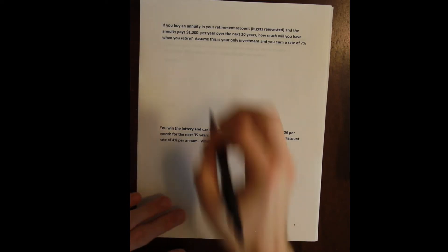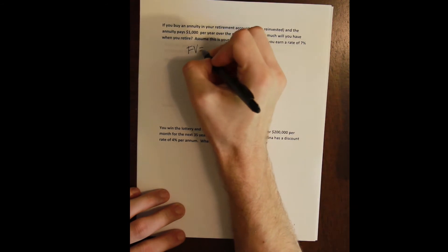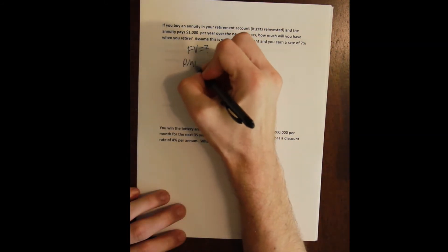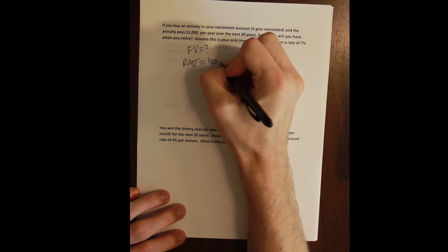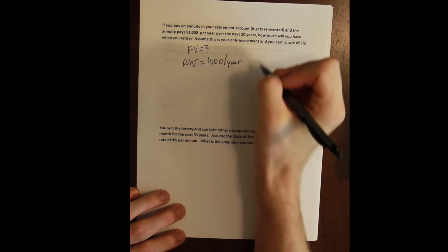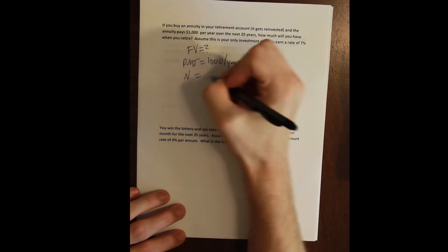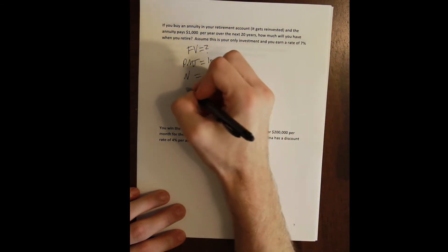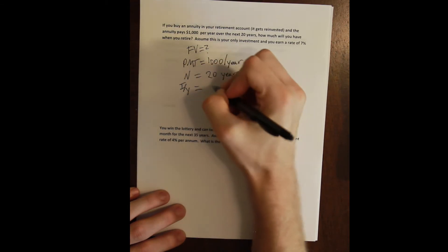Assume you earn a rate of 7%. So here we want to know the future value of this annuity. We know the payment, the payment is $1,000 per year. We know the n, we're going to leave it, this payment is going to occur for 20 years. We know the rate because we're going to get 7% per year.